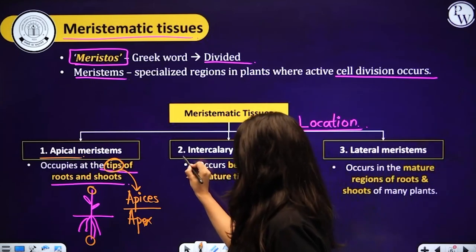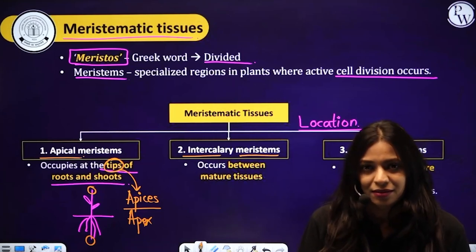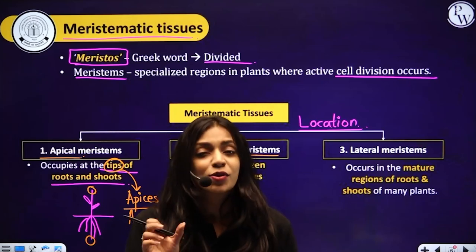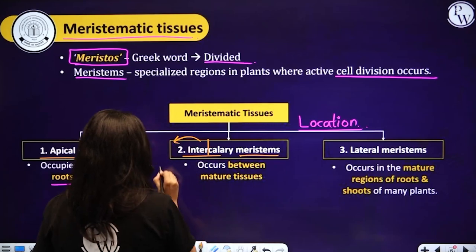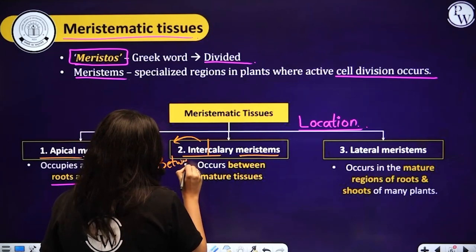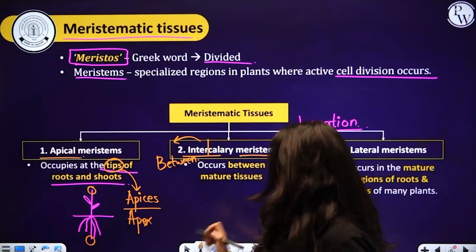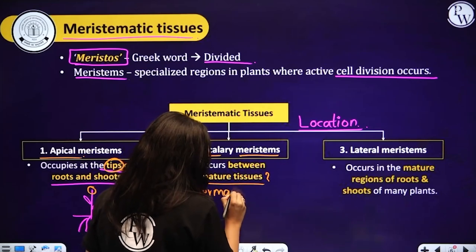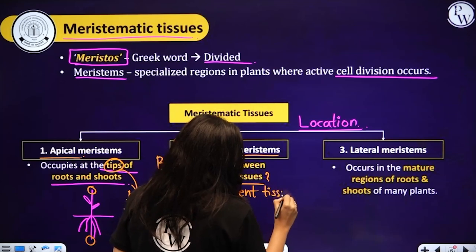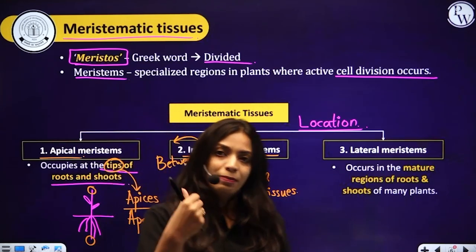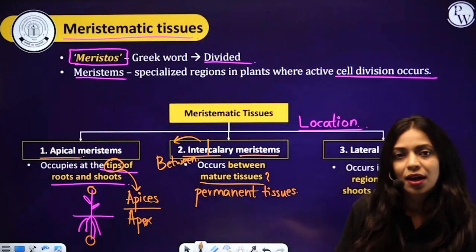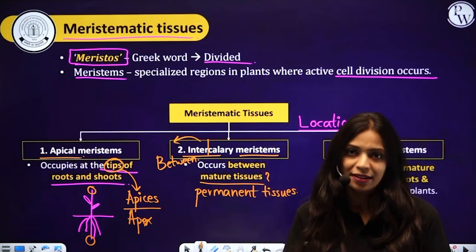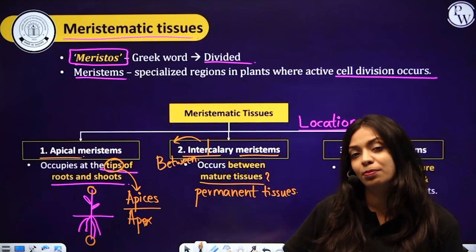The second type is intercalary meristem. 'Inter' means in-between — as in inter-class competition, inter-college competition. Intercalary meristem will occur in-between mature tissues, which are nothing but permanent tissues. Within the plant, you will find meristematic tissues as well as permanent tissues. If the meristematic tissue is present in-between the permanent tissues in plants, we refer to it as intercalary meristem.